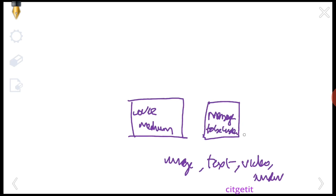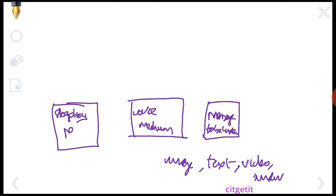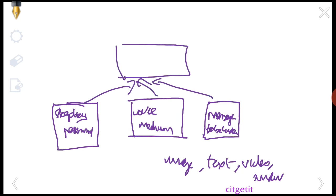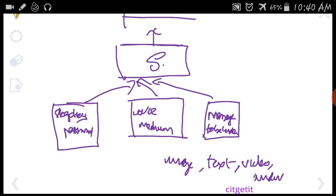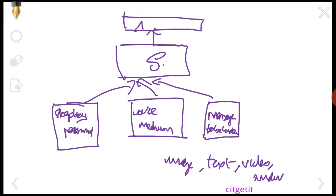Second, we have the text to be hidden. If you have a key, we can add the key — this is called the stegokey or password. We add the key to generate the stegomedia. This stegomedia is our final output message.